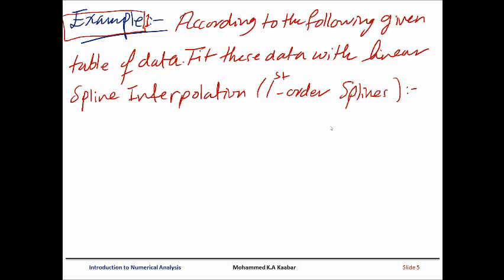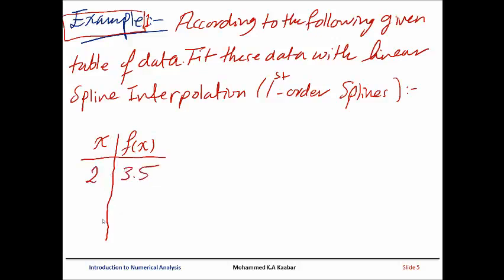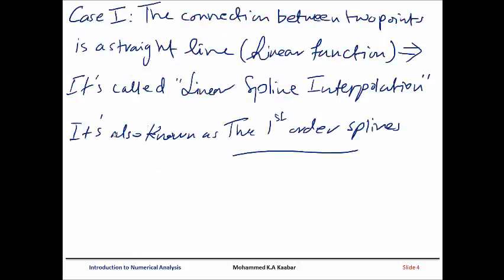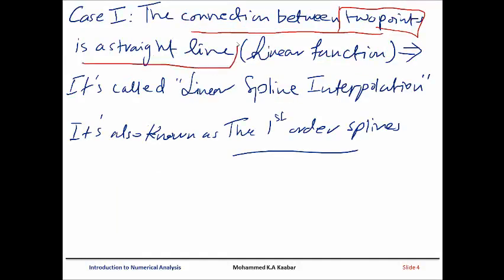This is the data. x values and f(x) values: the first data point is (2, 3.5), the second is (3.5, 1), then (6, 2), and (10, 0.5). According to linear spline interpolation, the connection between any two points is a straight line — a linear function. This is called linear spline interpolation.